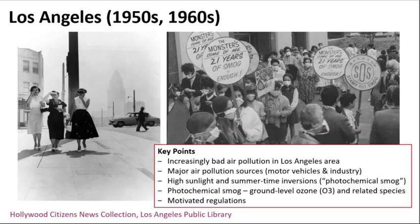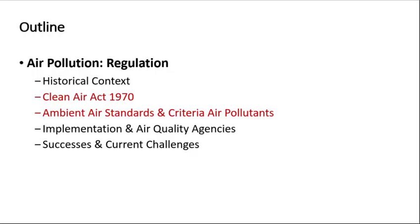As a result of persistent air quality problems from photochemical smog in Los Angeles, the first air quality agencies in the country were established there, tasked with developing and enforcing regulations to control air pollution concentrations and emissions. These early air pollution problems led to air pollution regulation in the U.S. culminating in the Clean Air Act of 1970, and with it the development of ambient air quality standards and criteria air pollutants.